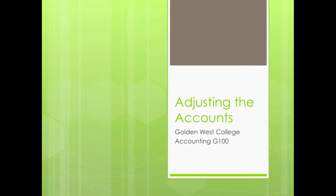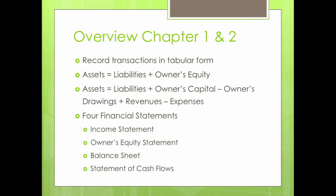In chapters one and two, you learned about recording transactions in tabular form. You learned the accounting equation, which is assets equals liabilities plus owner's equity. And you learned about the expanded equation, which is basically expanding owner's equity to include owner's capital minus owner's drawings plus revenues minus expenses. And we learned about four financial statements: the income statement, the owner's equity statement, the balance sheet, and the statement of cash flows.